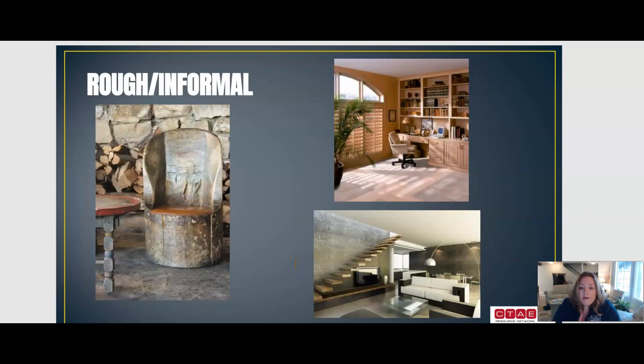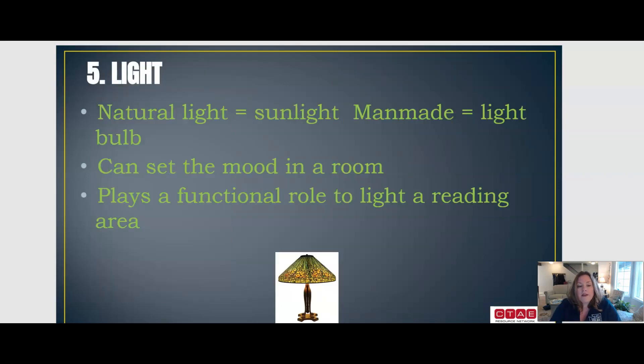Now we have rough and informal spaces that we are looking at. Our fifth element is light—natural light, which is sunlight, versus man-made, which is a light bulb. You could set the mood in a room and it plays a functional role to light a reading area.